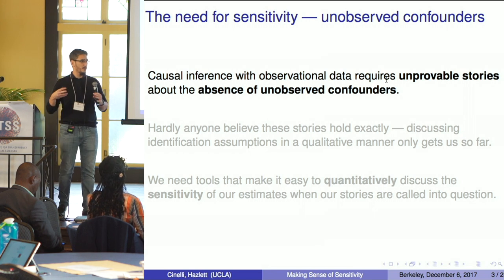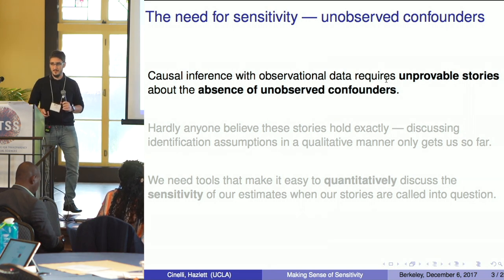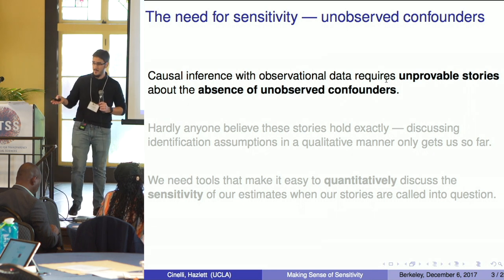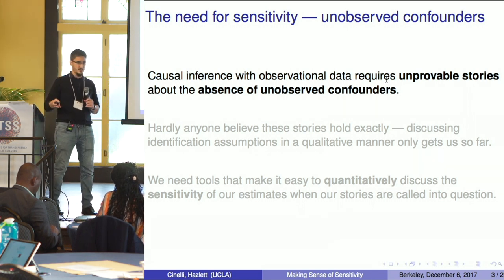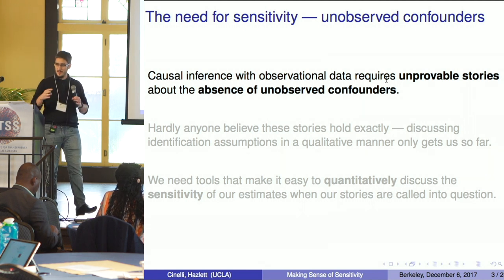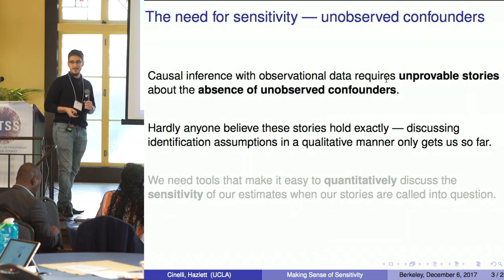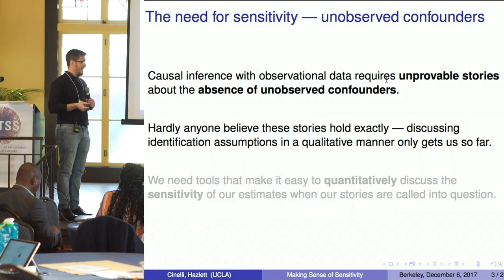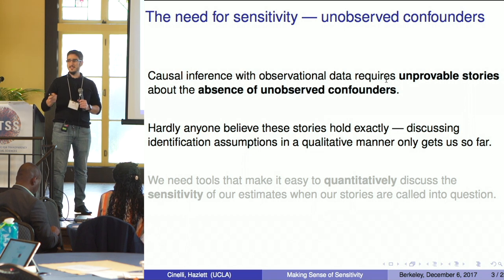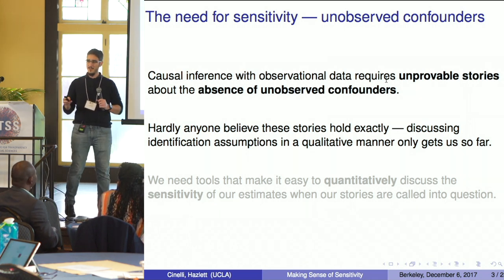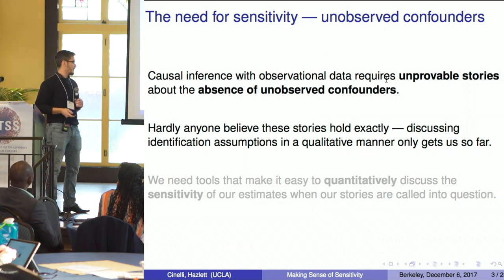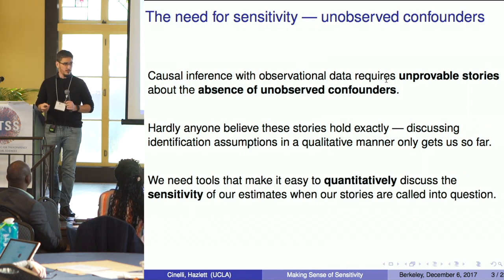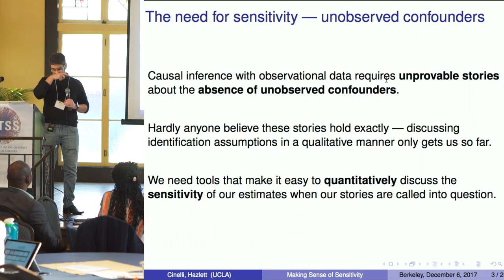This story illustrates a common problem in causal inference: for identification you need improvable stories about the absence of unobserved confounders. You can't prove it. For example, in IV you assume the instrument is not confounded and the exclusion restriction holds. Any causal inference method requires improvable stories about unobserved confounders. Hardly anyone will believe these stories hold exactly, and discussing identification assumptions qualitatively only gets us so far. We need to move from qualitative to quantitative statements.